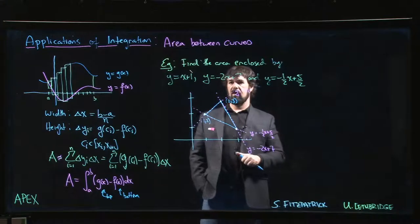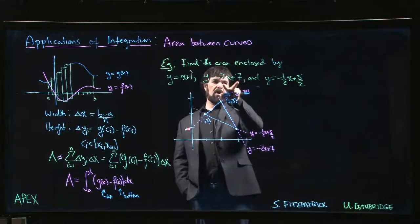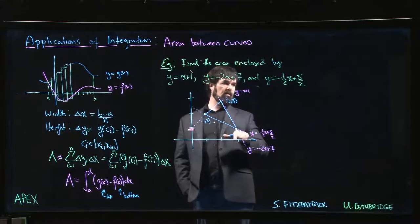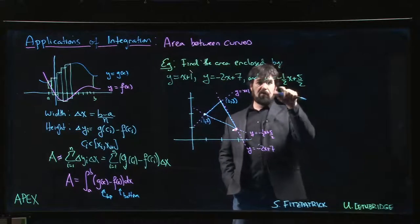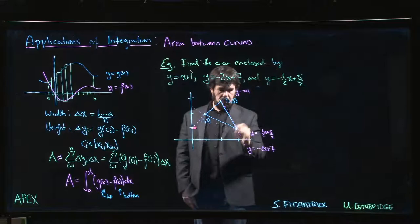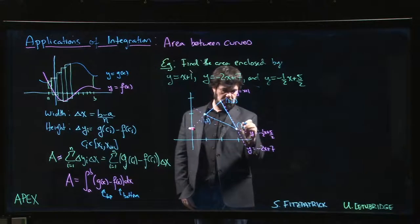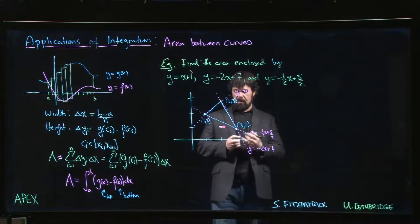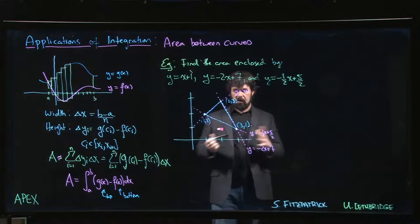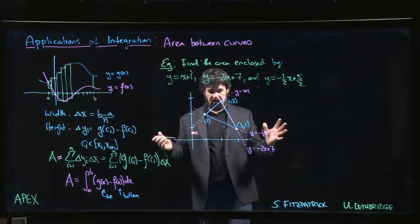And finally down here if x is equal to 3 then this is 7 minus 6, that's 1. And here if x is equal to 3 I get 5 halves minus 3 halves also 1. So this is the point 3, 1. So those three points are the vertices of our triangle. It kind of gives us the extent of our region.